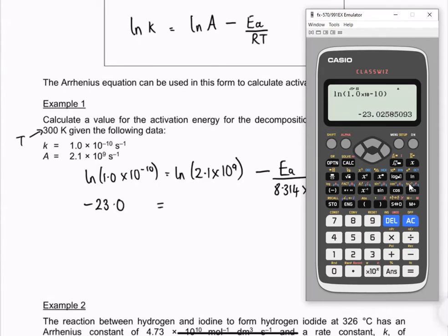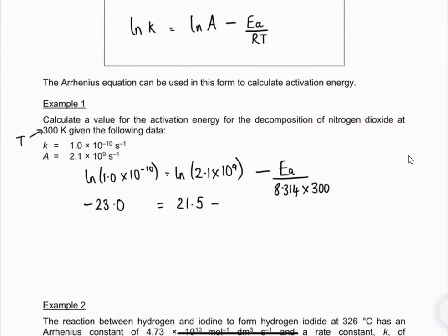I'm going to do the other log, ln 2.1 times 10 to the 9. That one's coming out as plus 21.5. And then I'm going to just copy the rest of it for now. I'm just going to remove the calculator for a minute so we can see what we're doing. Minus Ea over 8.314 times 300.